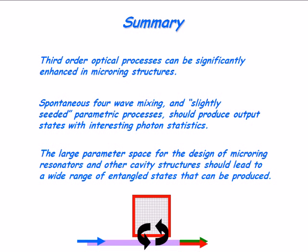So let me just summarize. I hope I've argued that third-order optical processes can be significantly enhanced in microring structures. It's also true for second-order nonlinear optical processes. Spontaneous four-wave mixing, which is the process that I talked about, and also slightly seeded parametric processes - when you put in a little bit of a seed at another frequency - should produce output states with interesting photon statistics. I haven't demonstrated that, but I hope I've given you plausibility arguments that maybe you might be interested enough to read our papers and look at the calculation and convince yourself that it's true.